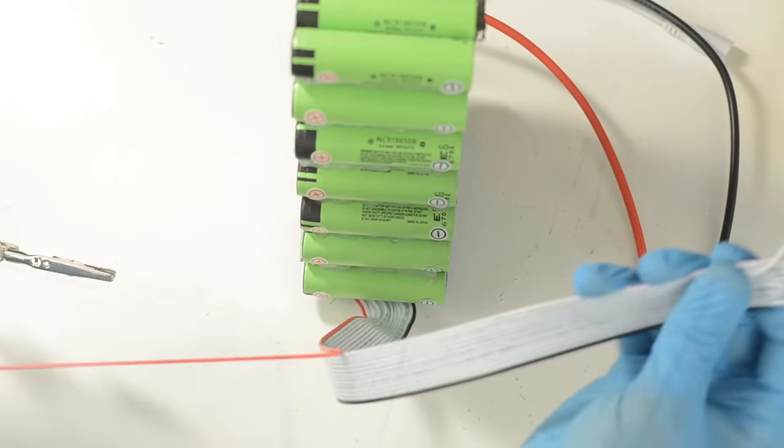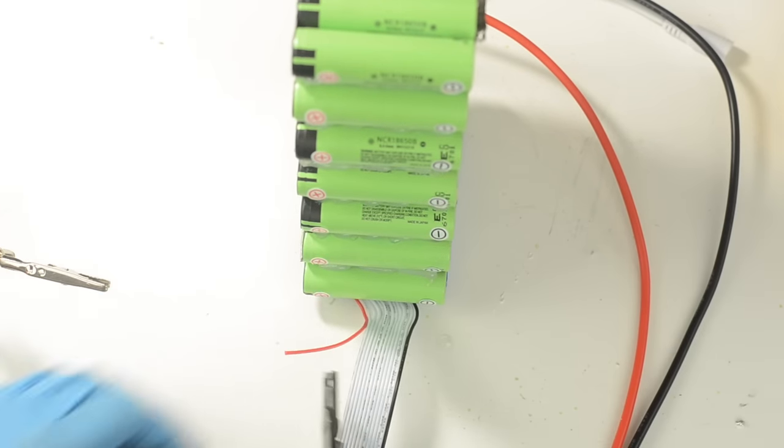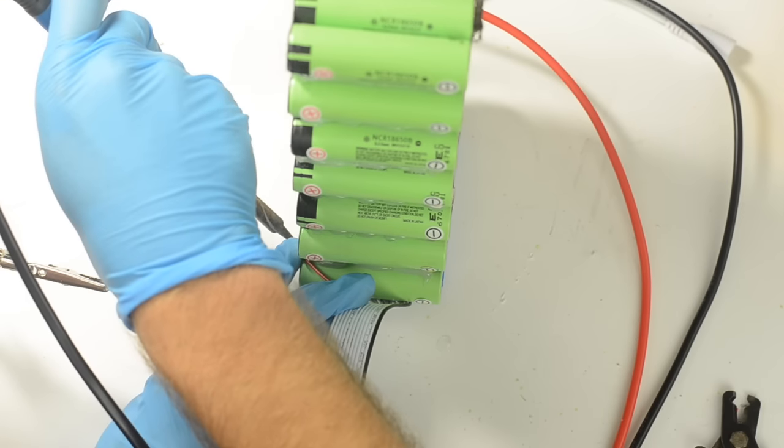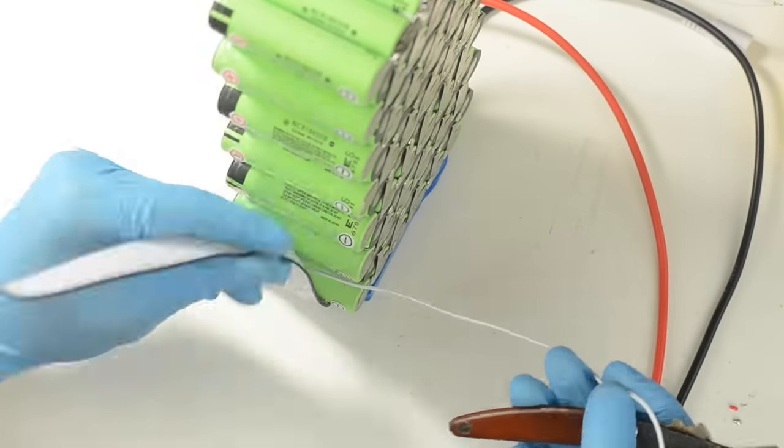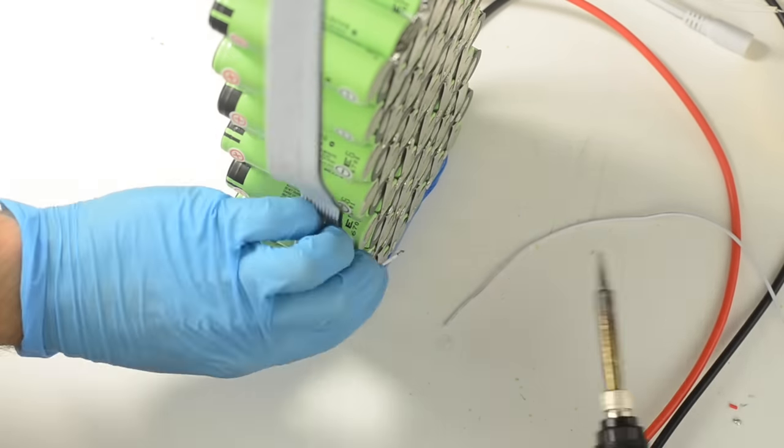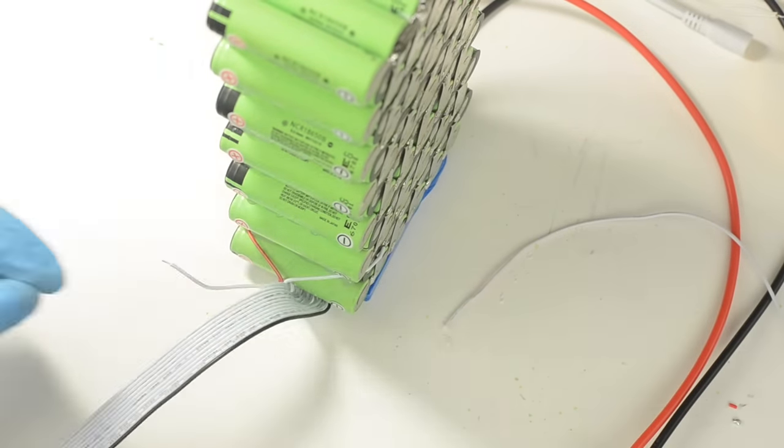Now I'm ready to do the small BMS wires. Here this first red wire is going to get soldered to the positive end of the 13th cell group, and then each wire afterwards is going to get soldered to the positive end of the next lower group. So I'll do the positive end of the 12th group, then this next wire will be the positive end of the 11th group.